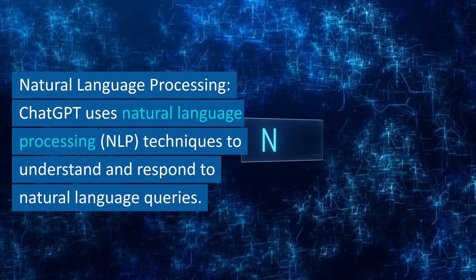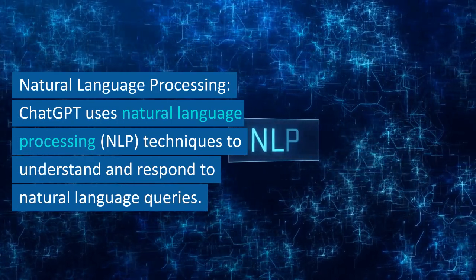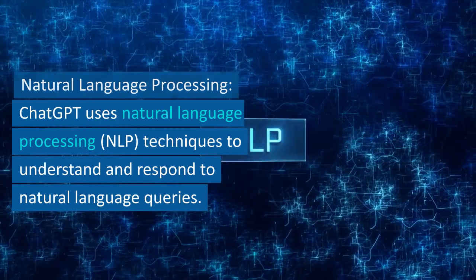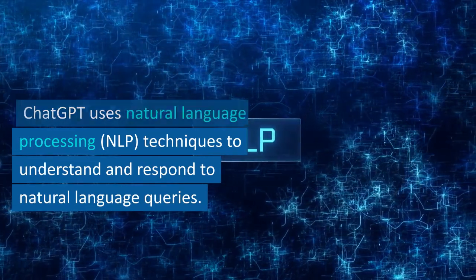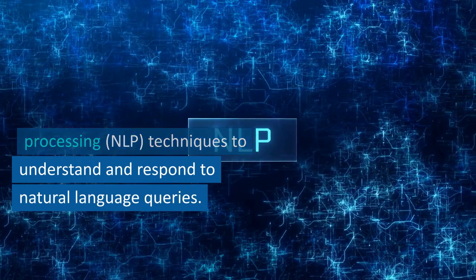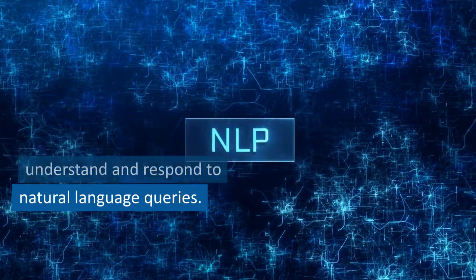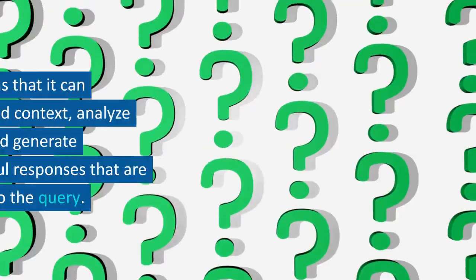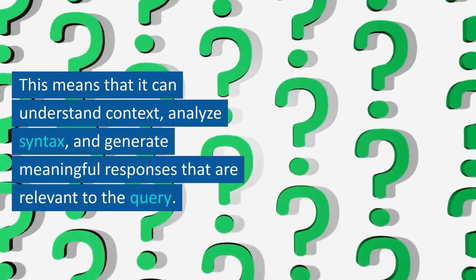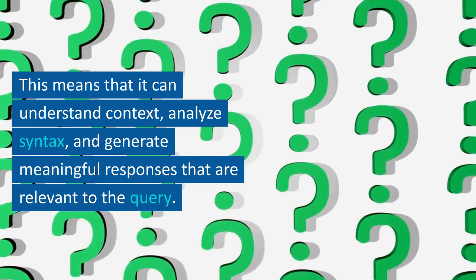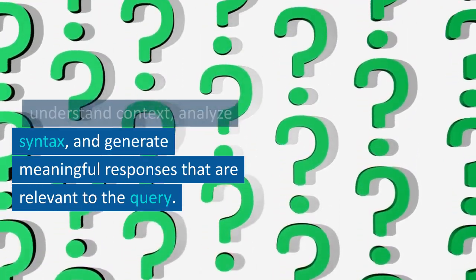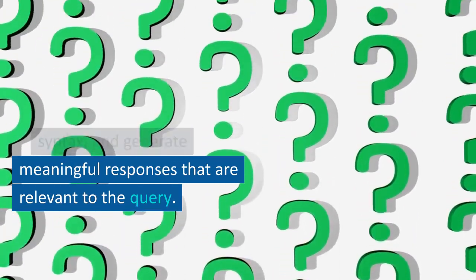Natural Language Processing: ChatGPT uses natural language processing (NLP) techniques to understand and respond to natural language queries. This means that it can understand context, analyze syntax, and generate meaningful responses that are relevant to the query.